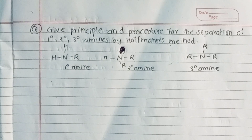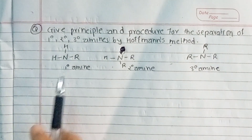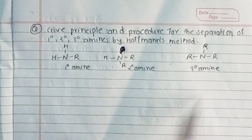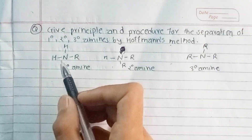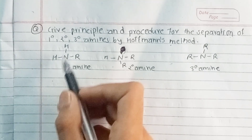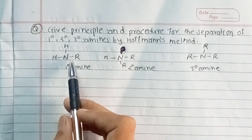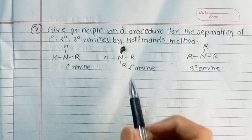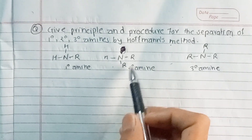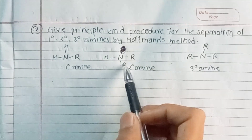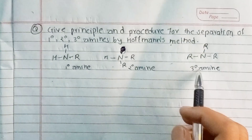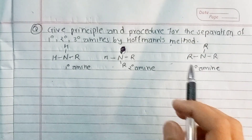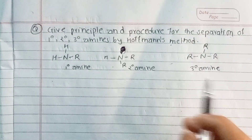What we need to do is identify 1 degree, 2 degree, and 3 degree amines. In the structure, we have an alkyl group R. This is 1 degree. For 2 degree, we have two R alkyl groups, and for 3 degree, we have three R alkyl groups.